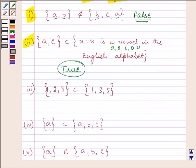Proceeding on to the third statement. It says that {1, 2, 3} is a subset of {1, 3, 5}. But the element 2 is not present in this set, and hence it is a false statement. A set can be a subset of another set only when all the elements of the set are present in the other set also.